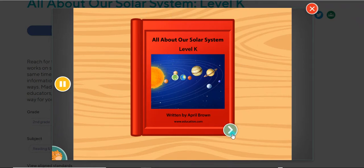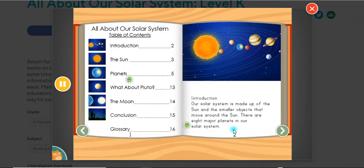All About Our Solar System Written by April Brown. Introduction. Our solar system is made up of the Sun and the smaller objects that move around the Sun. There are eight major planets in our solar system.